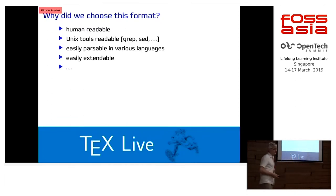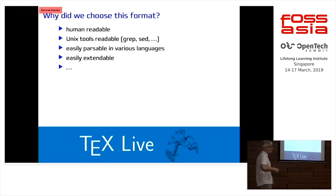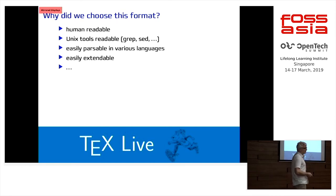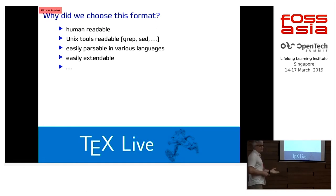Why did we choose this format? First, it's human readable — I can read it, I can edit it, I can fix it if something is broken. We can use grep, sed, whatever, for all the cron jobs running in the background doing automatic testing, updates, and consistency checks. It's easily parsable in various languages — this is something you can write a parser for even in shell. Actually, I wrote a parser in shell — it's trivial. And it's easily extensible: you can just throw in new keys and that is not a problem.